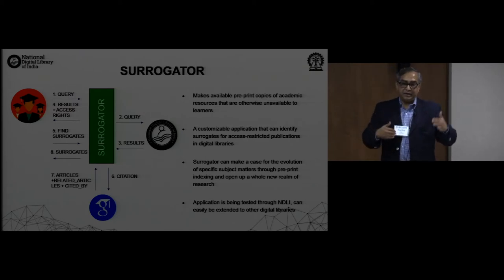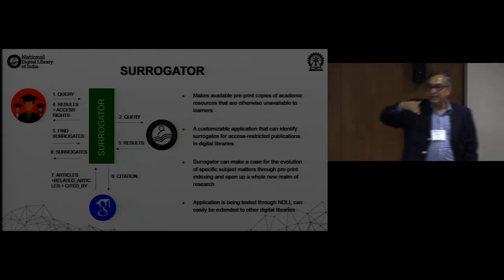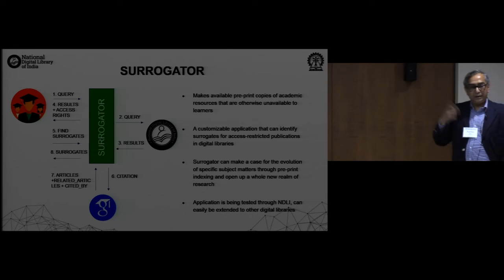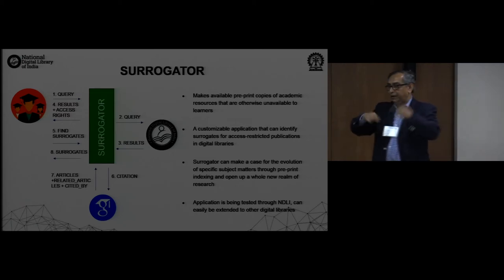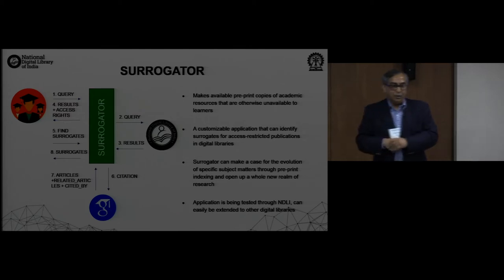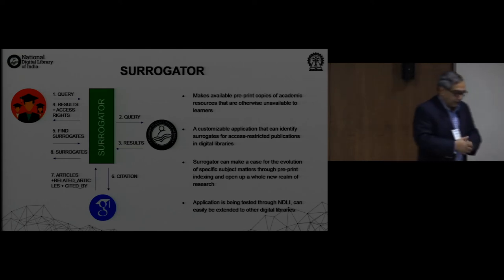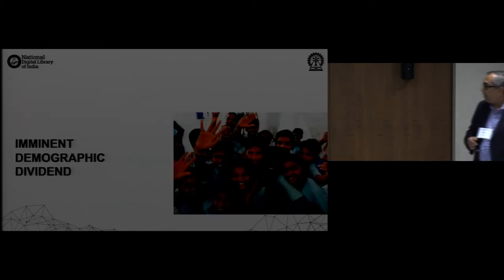There's a ranking of these surrogates — this is a preprint, this is a little older, this is acknowledged to be a later version. All that it needs is for Google to do the work: from the original query, you form intelligent queries, keep firing them on Google, collect the results, compare them, and rank the surrogates. We want to make it a part of the library's open interface so everybody can benefit from that.